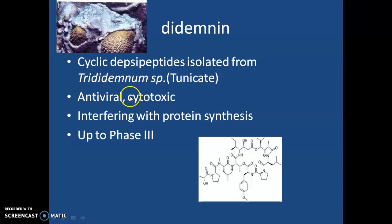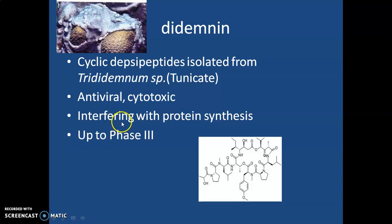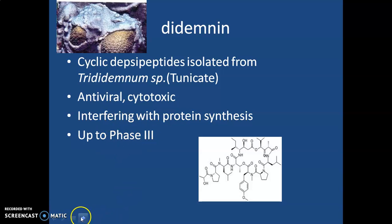Didemnin is an antiviral drug that also shows cytotoxic activity. It mainly acts by interfering with protein synthesis in the host cell by the virus. However, this drug has not been processed further due to its toxicity, and it progressed up to phase 3 of clinical trials.